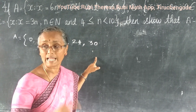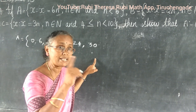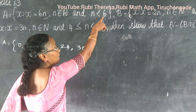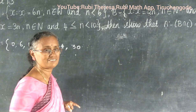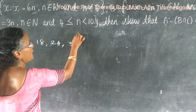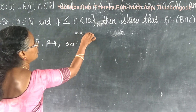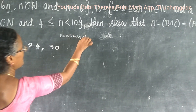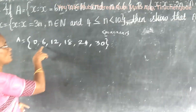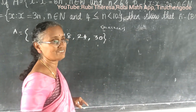No, because n is less than 6. So n equals 0, 1, 2, 3, 4, 5. Therefore A equals {0, 6, 12, 18, 24, 30}.